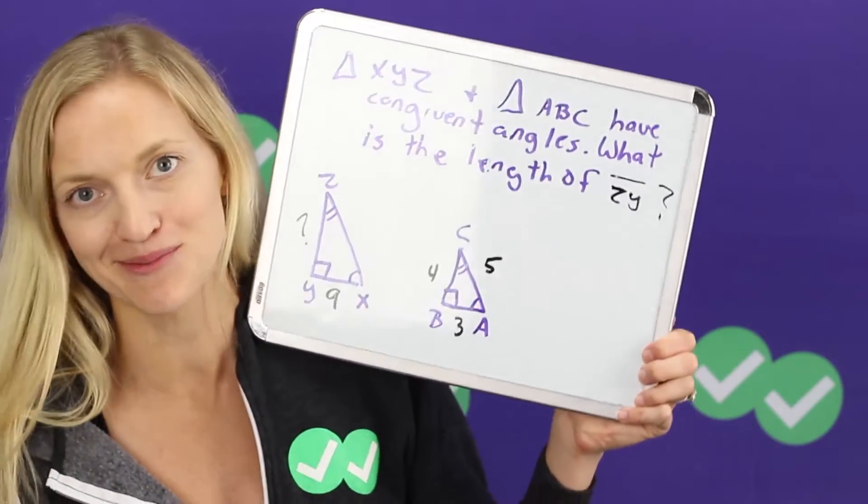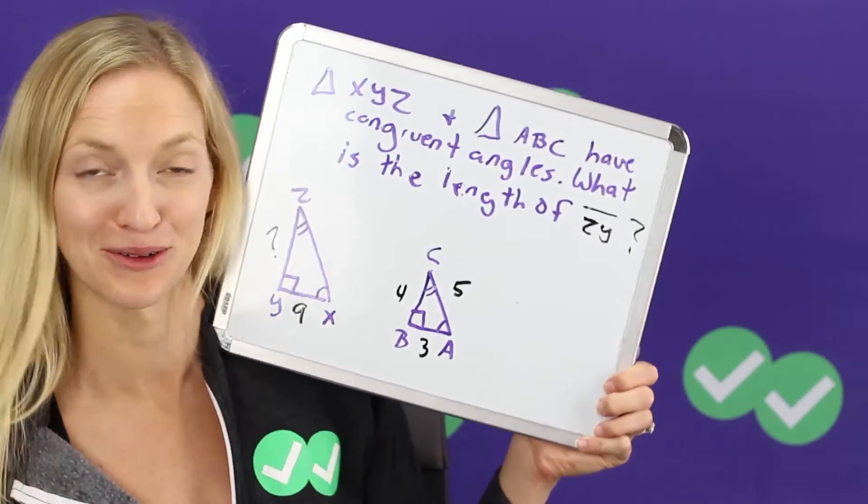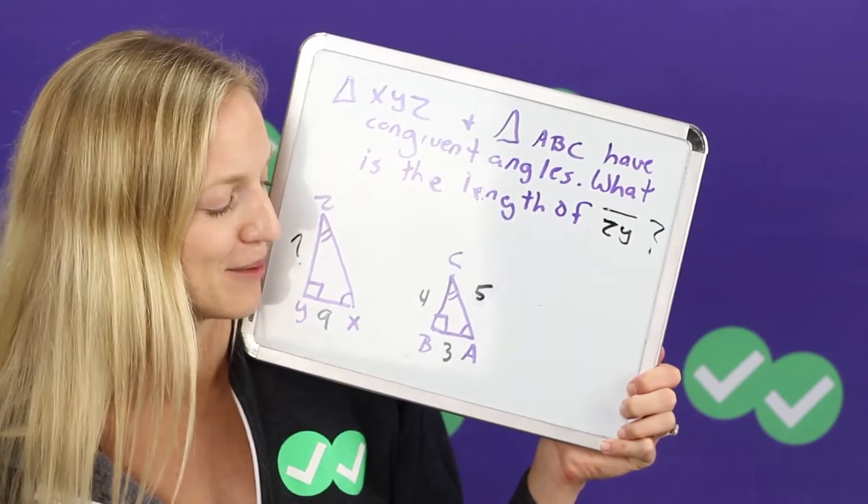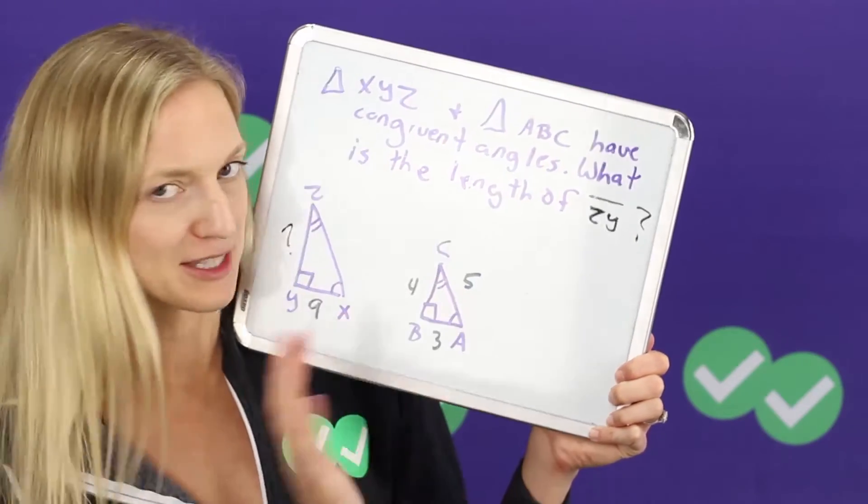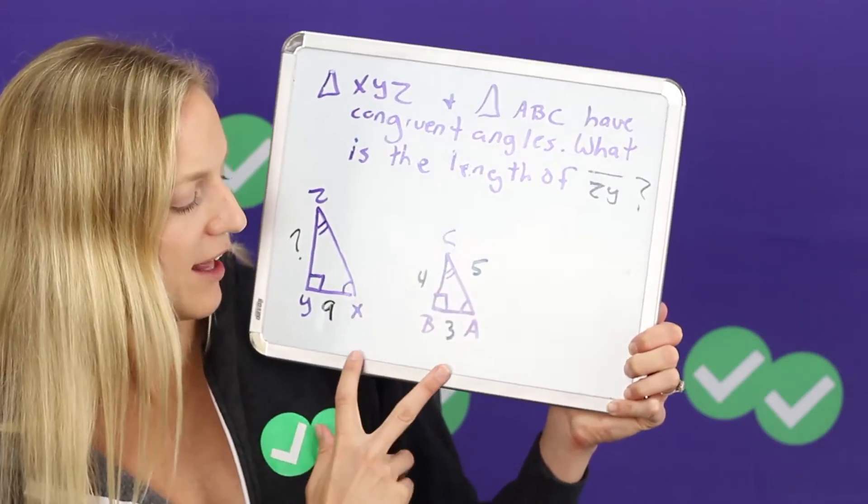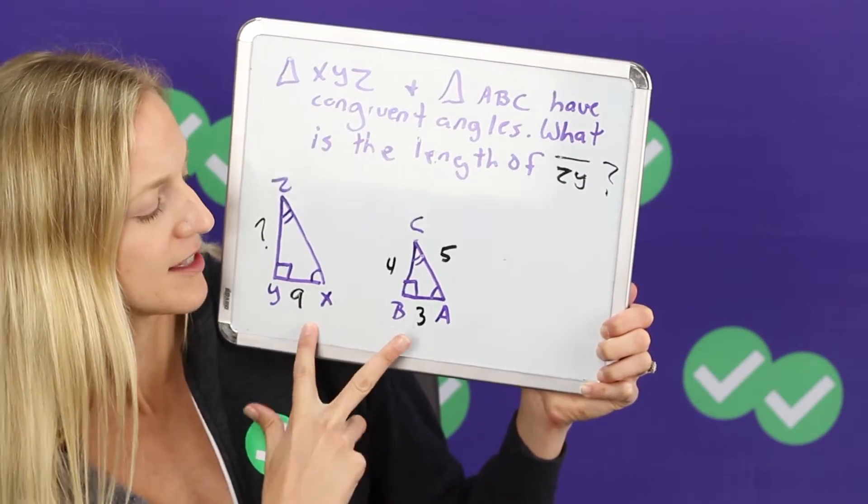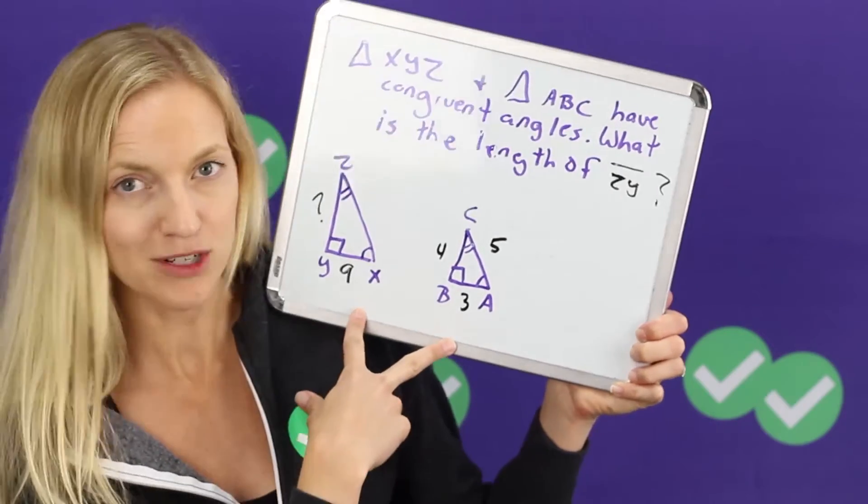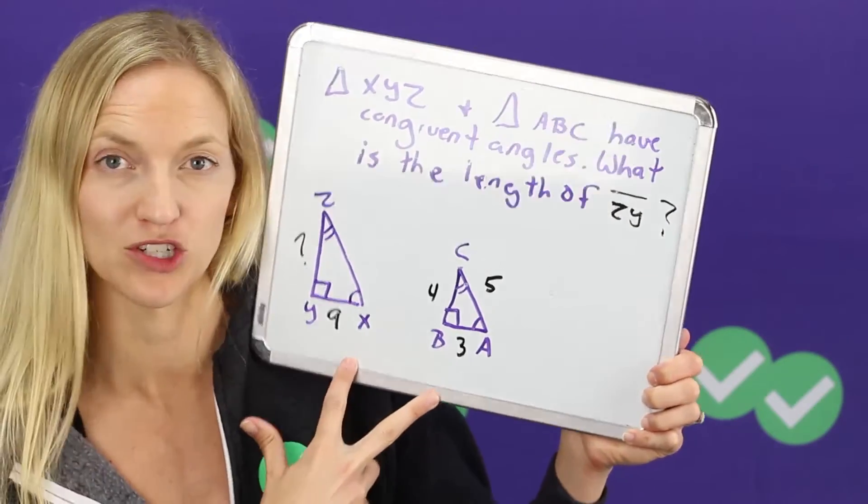Now a couple other things to note, you may have already realized that because we're dealing with some pretty easy numbers here for this sample problem, 3-4-5, it's a pretty simple triangle you might recognize, and you can tell if you look at this that 9 is three times 3.